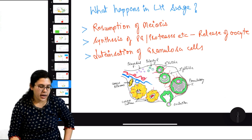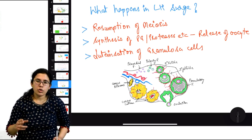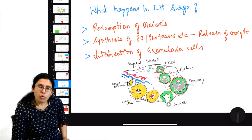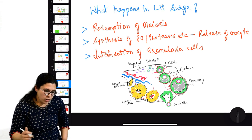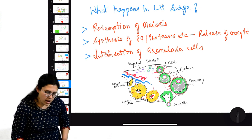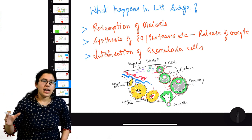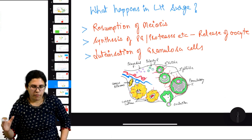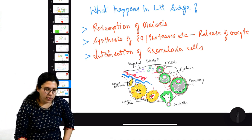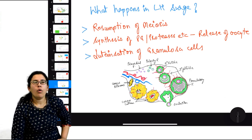LH surge also causes synthesis of prostaglandins, proteases, and scissor enzymes which cut the wall of the follicle and ovary, helping the egg to come out so it can be picked up by the fimbria of the fallopian tube. Additionally, granulosa cells have acquired LH receptors (induced by FSH) because they need to function as corpus luteum. This process of acquiring LH receptors is called luteinization of granulosa cells.